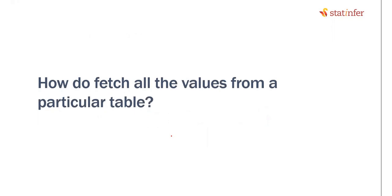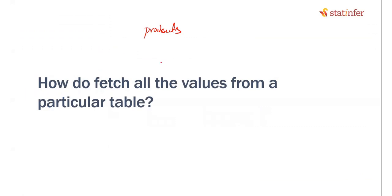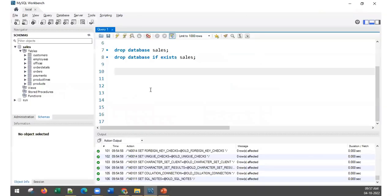Here is the first command: how do you fetch all the values from a particular table? Go back to the SQL mantra — SELECT * FROM WHERE. If you have the products table, how do you fetch all values from it? SELECT * means all values, all columns, all rows. So it becomes: SELECT * FROM products; — the semicolon indicates the end of the command. Go to SQL and type: SELECT * FROM products;